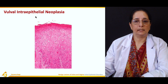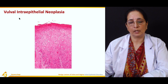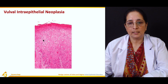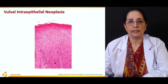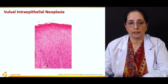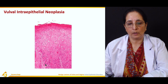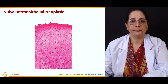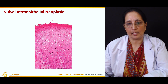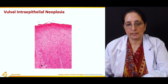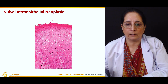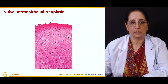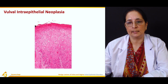Vulval intraepithelial neoplasia involves changes in the epithelial layer lining the vulva. You can see different atypical cells, loss of stratification, loss of polarity, and dysplasia of the cells. Different atypical cells are present, constituting vulval intraepithelial neoplasia.